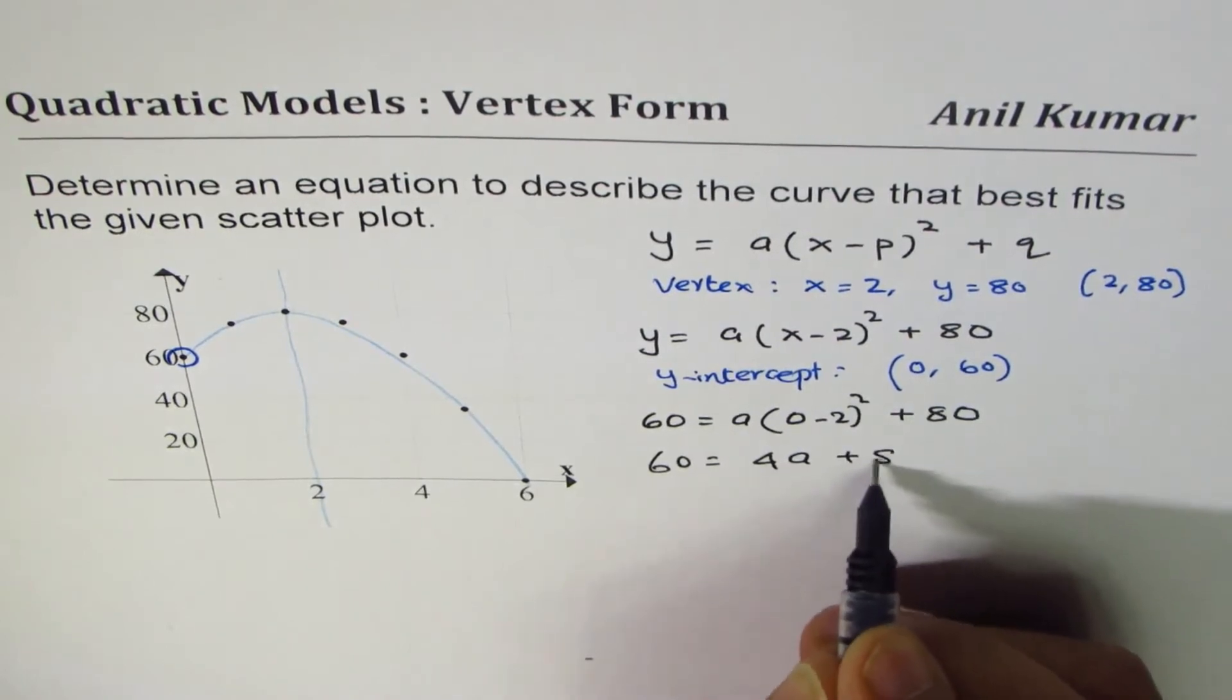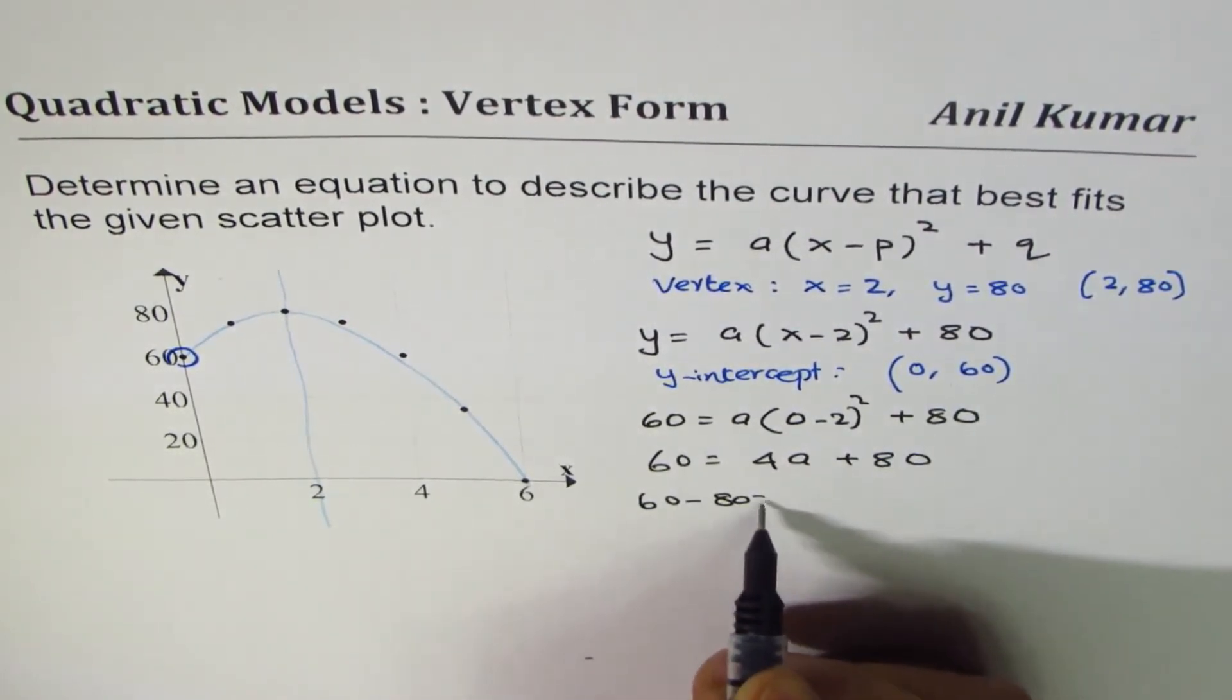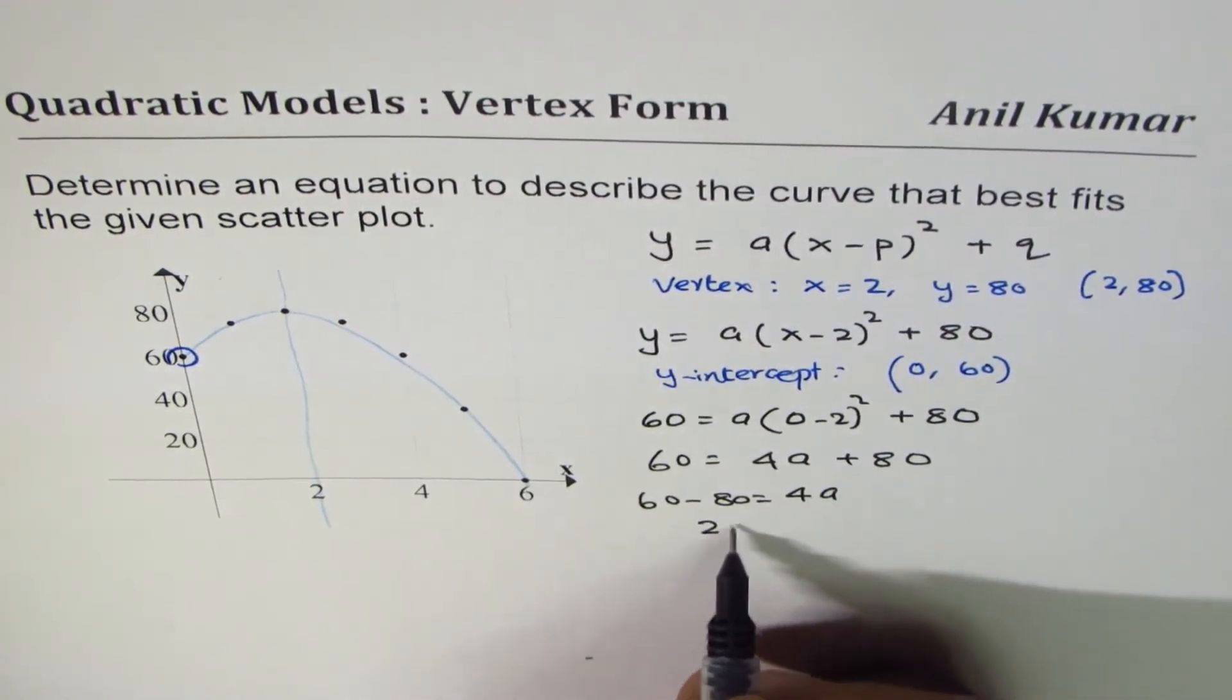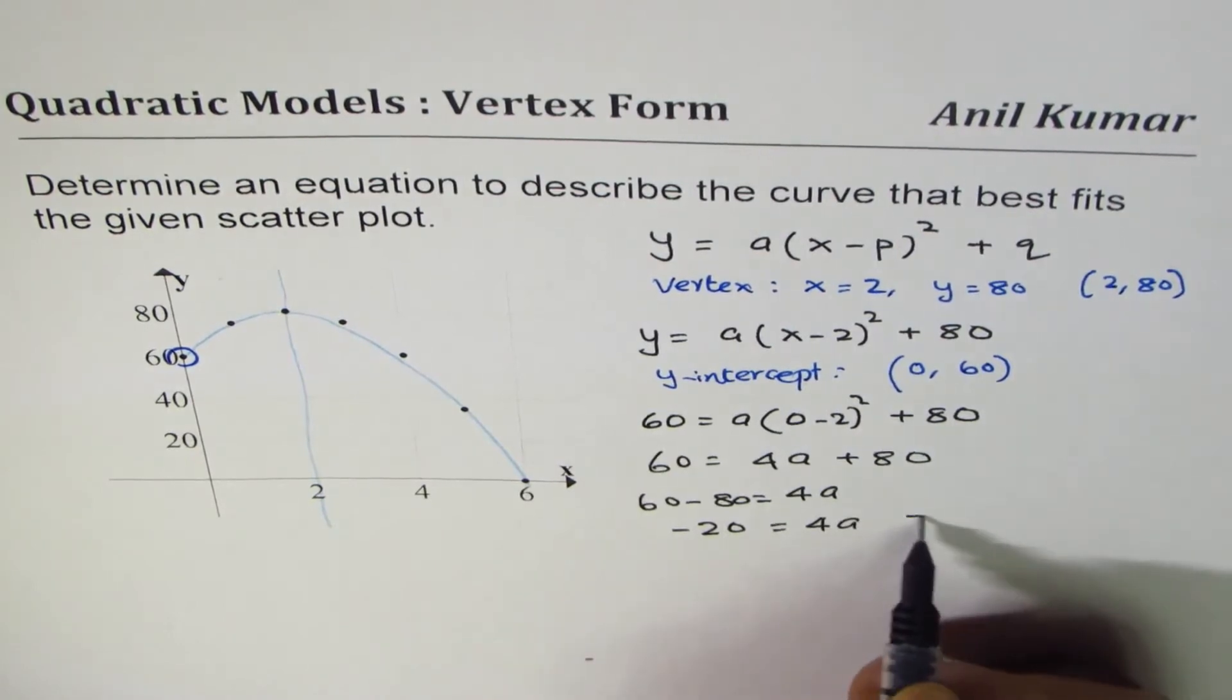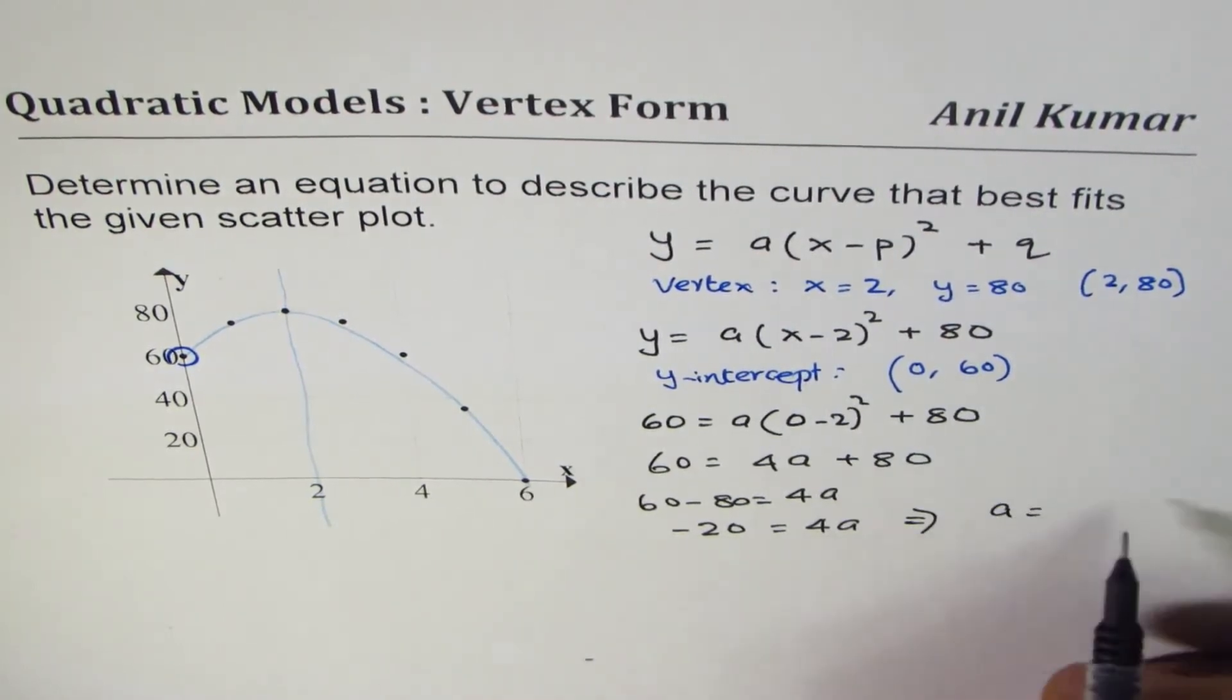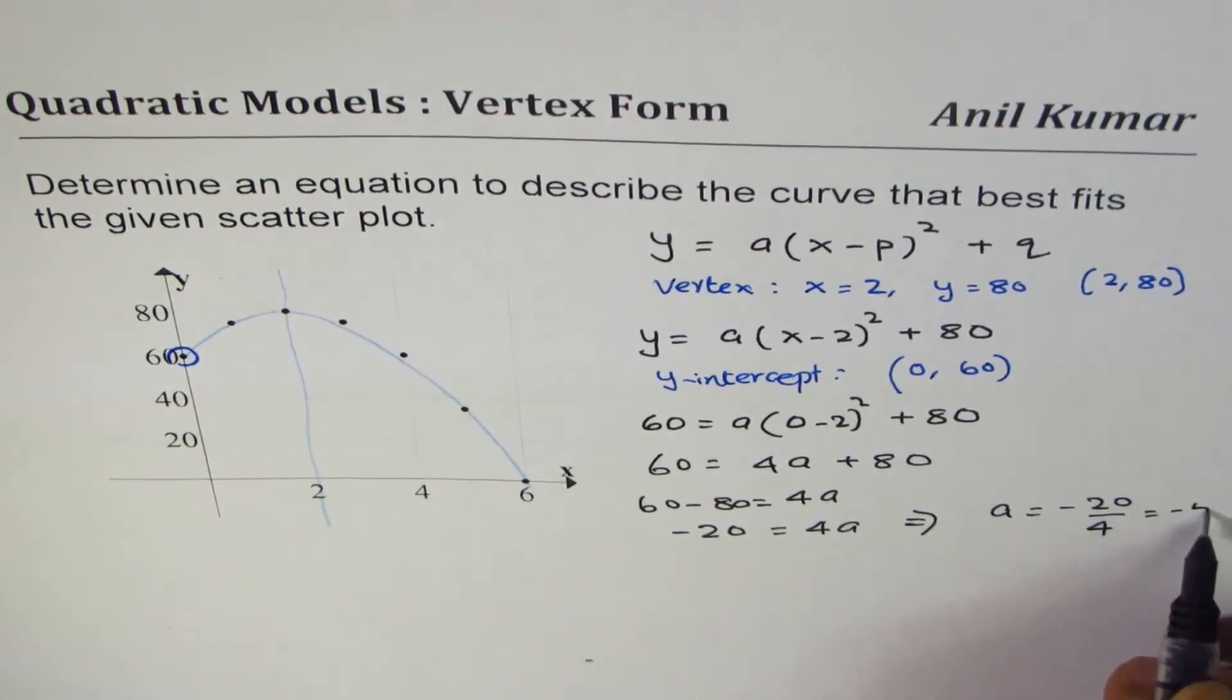4a plus 80 or 60 minus 80 equals to 4a. That is -20 equals to 4a. And that gives us the value of a as minus 20 over 4 or minus 5.